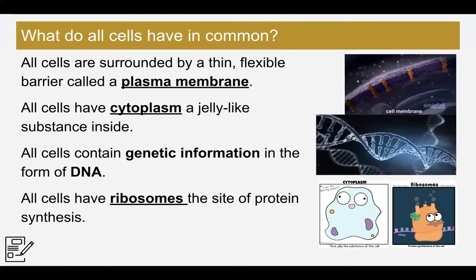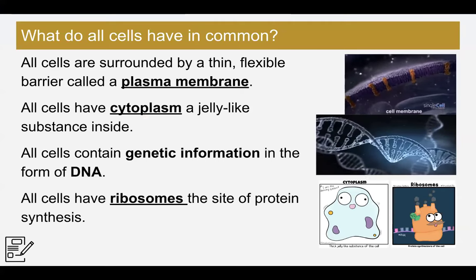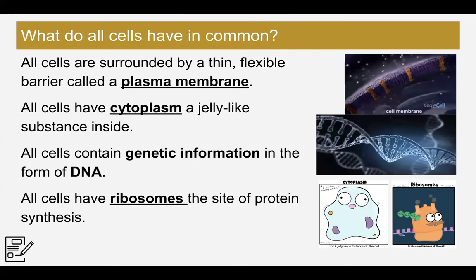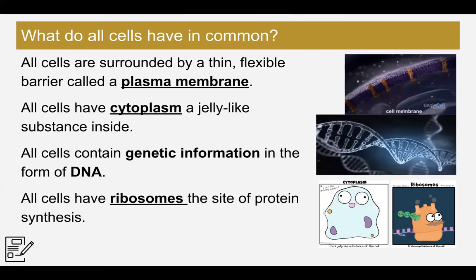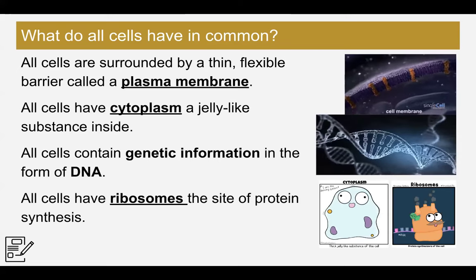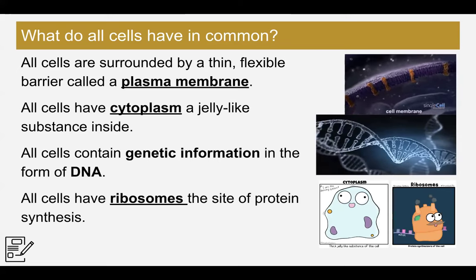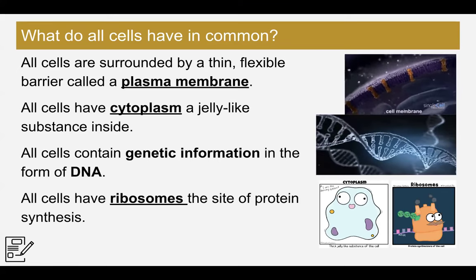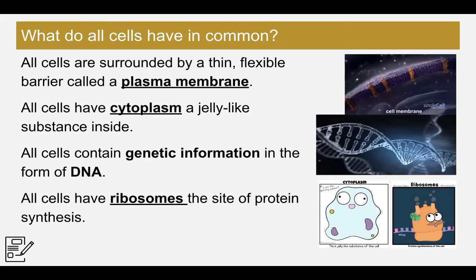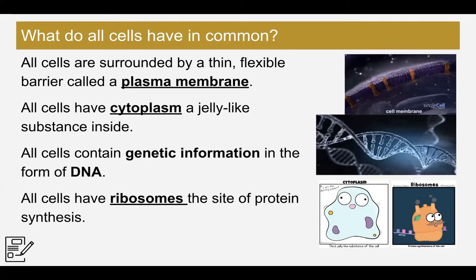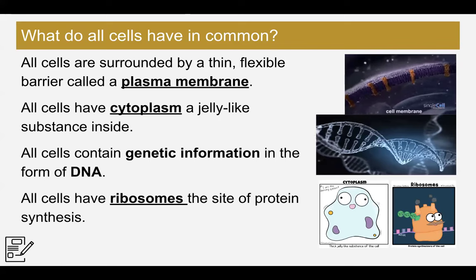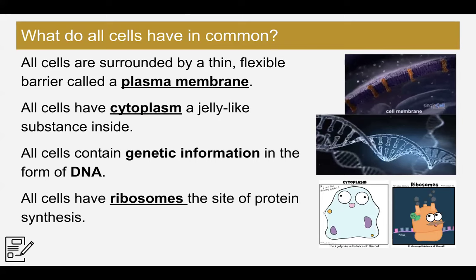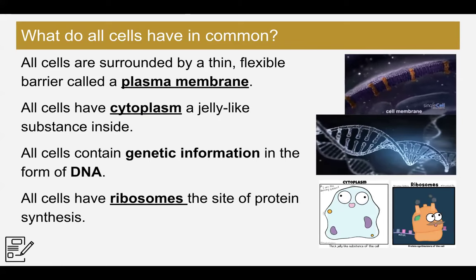Here's your second slide of notes: What do all cells have in common? All cells are surrounded by a thin, flexible barrier called a plasma membrane. All cells have cytoplasm, which is a jelly-like substance inside. All cells contain genetic information in the form of DNA. And all cells have ribosomes, which is the site of protein synthesis.